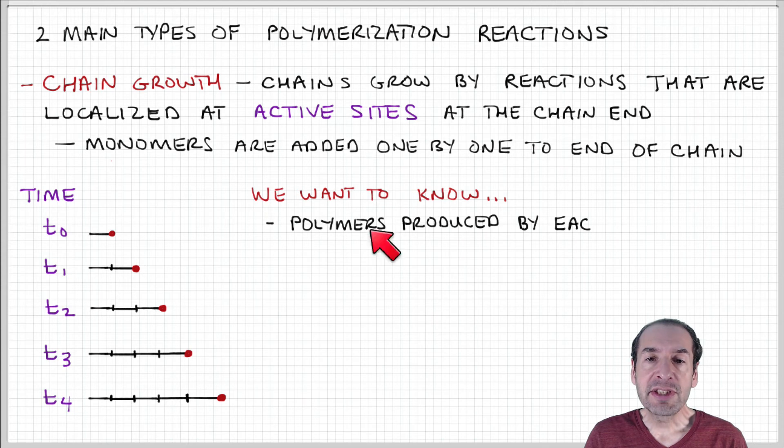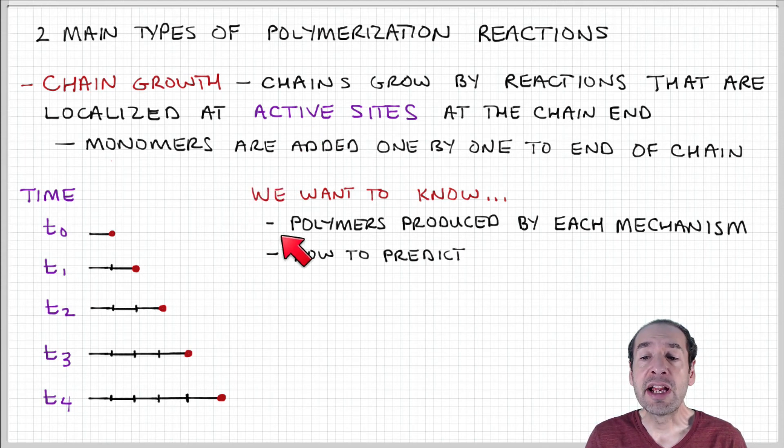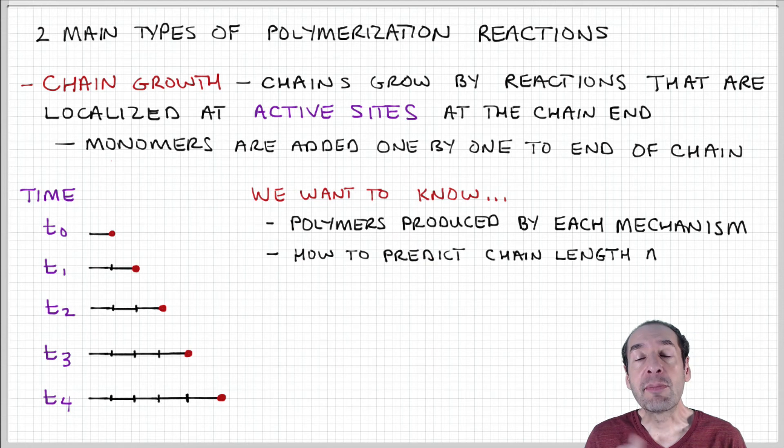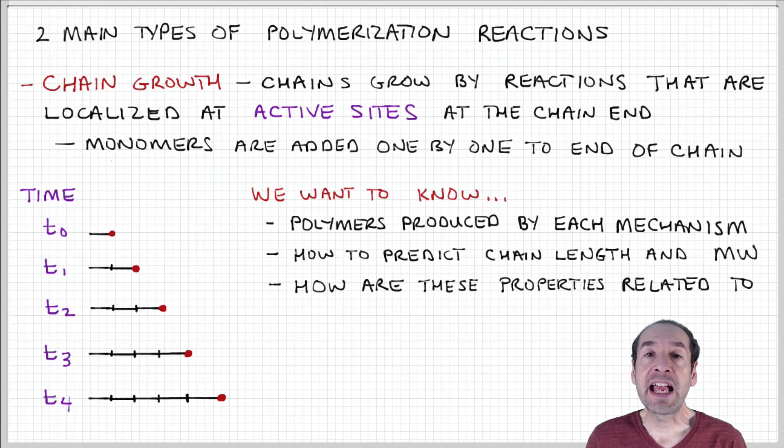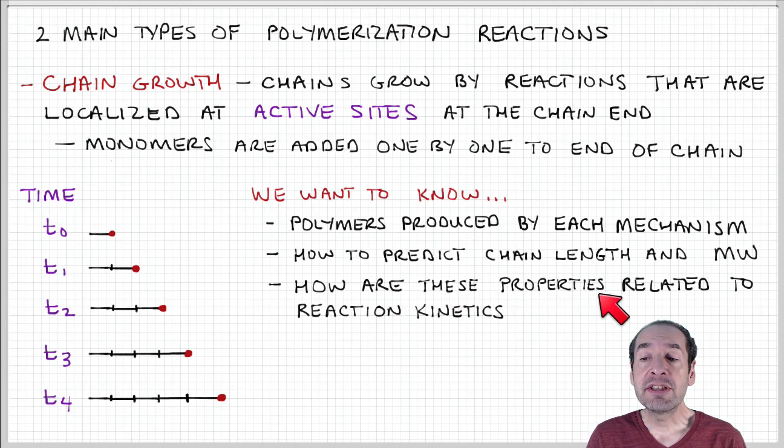These are the two kinds of reactions we're going to focus on, and the kinds of questions that we would like to answer are: what kind of polymers are produced by each of these synthesis mechanisms? How can we predict the chain length and the molecular weight of the polymers that are going to be produced using these two different reaction mechanisms? And how can these properties be tuned or adjusted based on the conditions that are used to synthesize them?